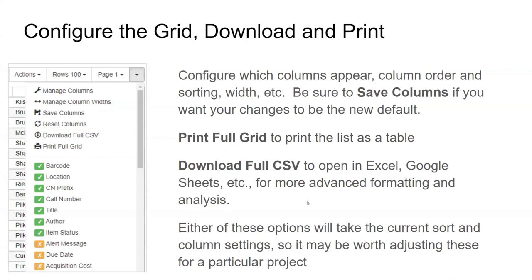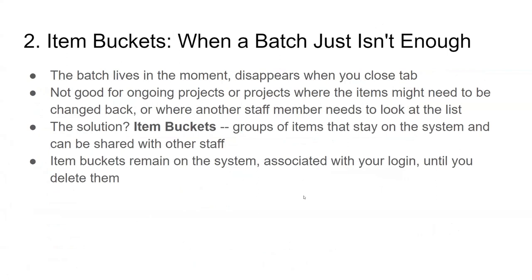Once you download the CSV, you can open it in Excel or Google Sheets. That gives you a way to do other kinds of statistics — pivot tables showing various things and all of that. So this can be a really handy way to get the data and then move it over into a program that is more powerful. That's working with a batch.